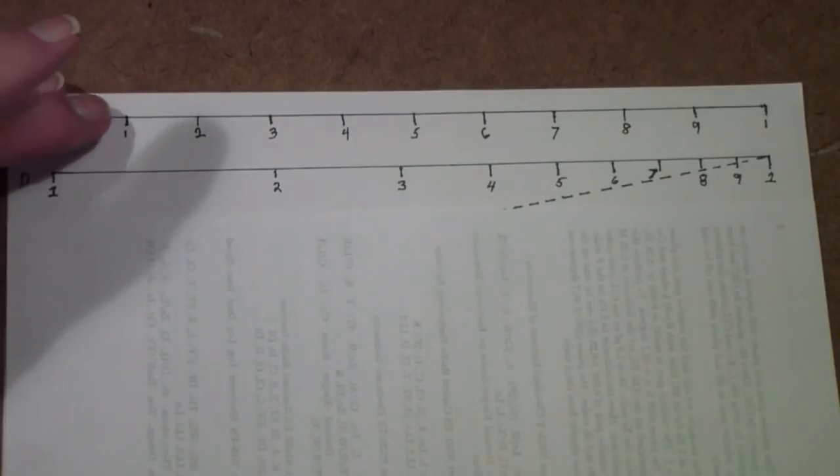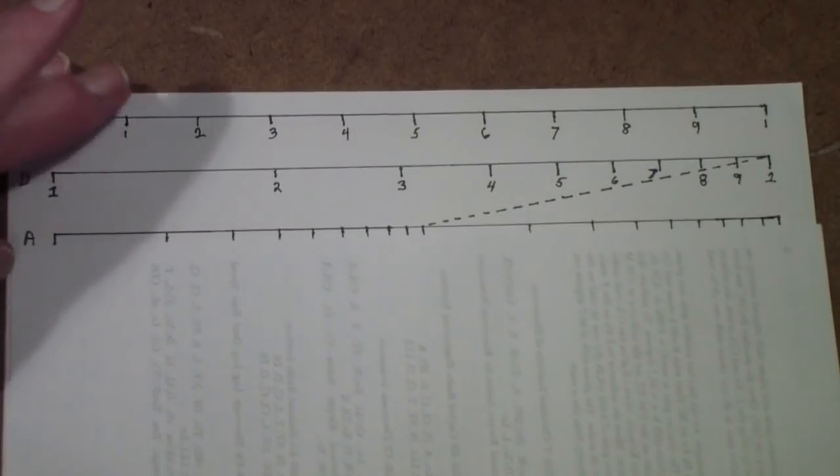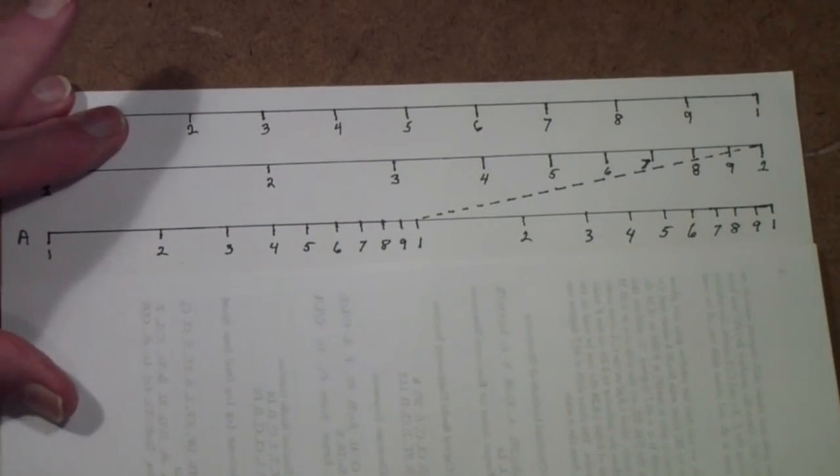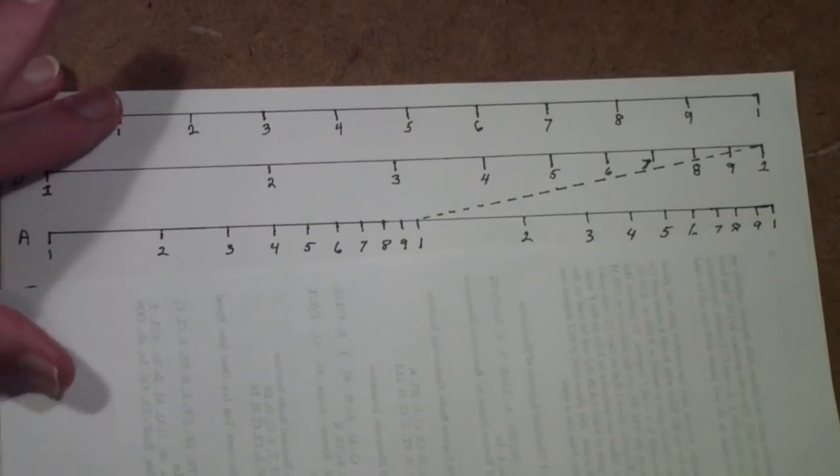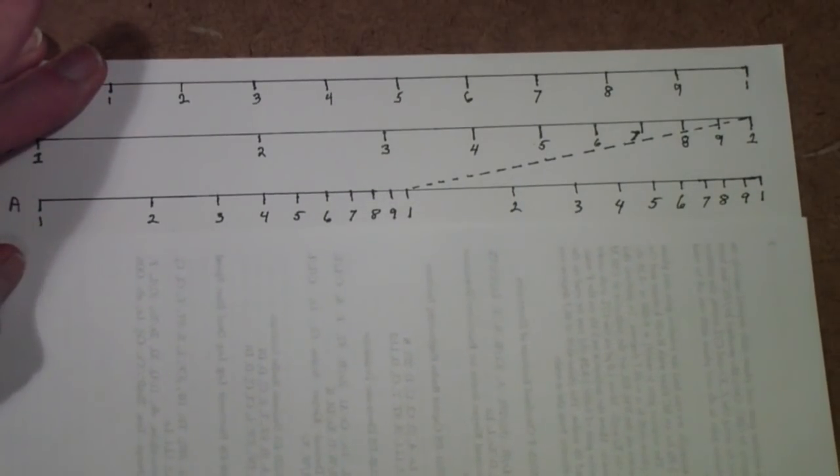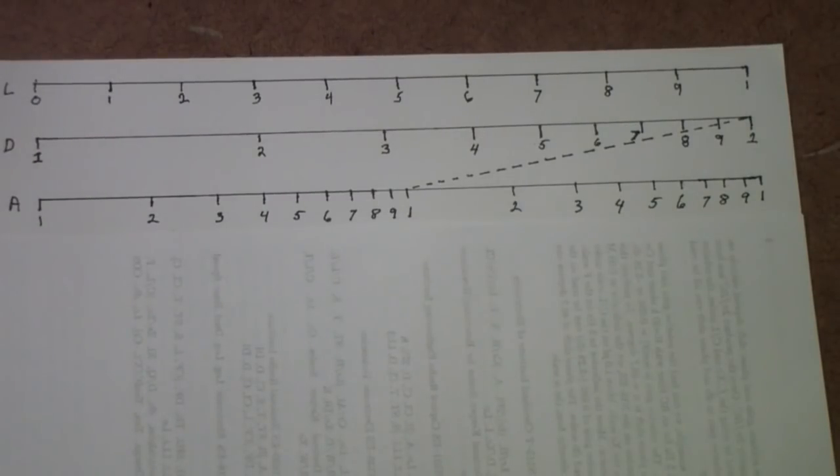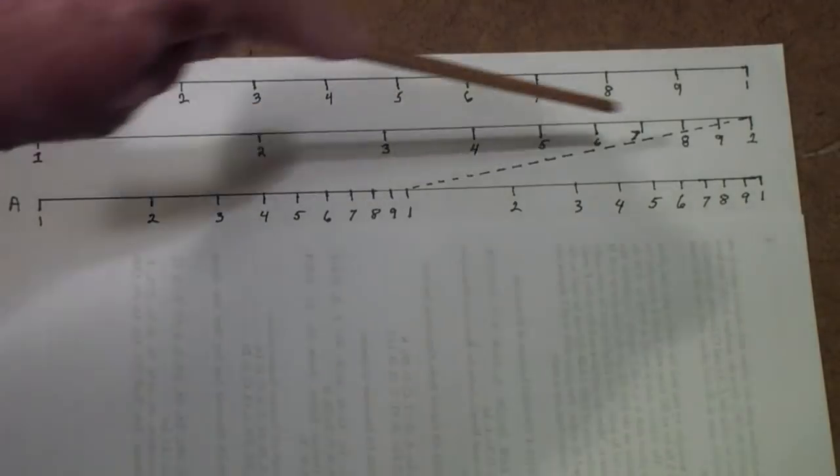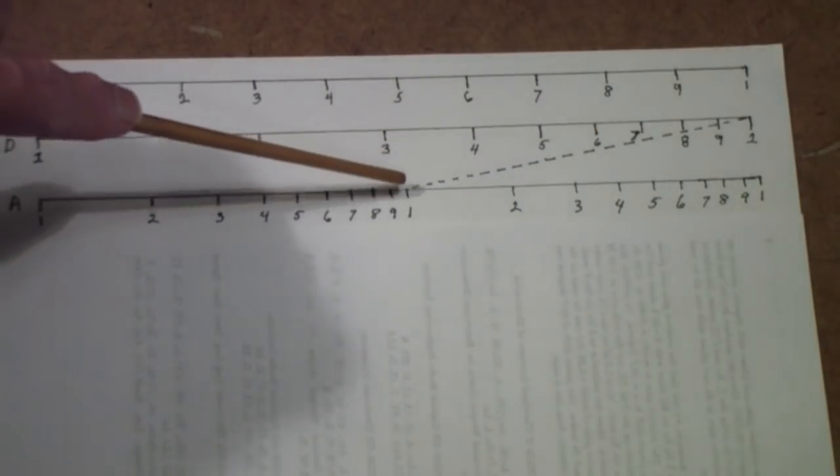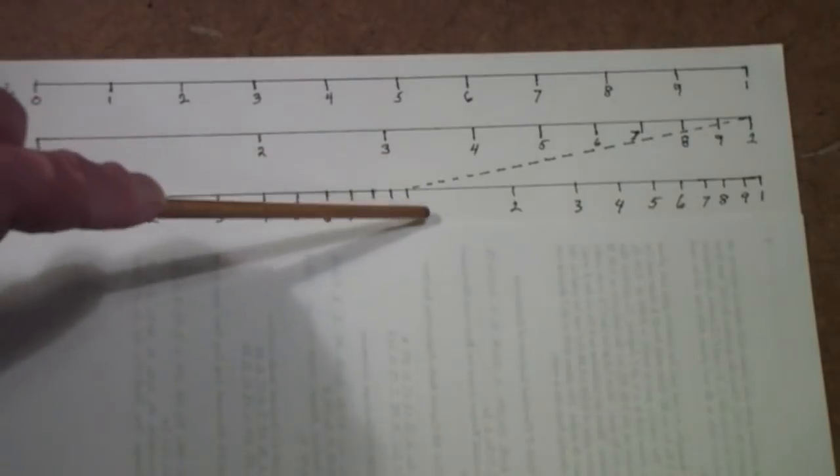That's the basis of slide rules. Now, almost all the other scales on a slide rule are derived from that simple scale. For example, the A scale, which is basically the square and square root scale, is just the D scale shrunk down to half its length and repeated.